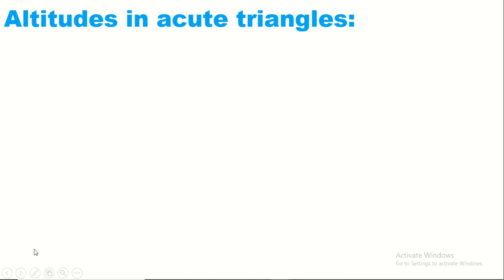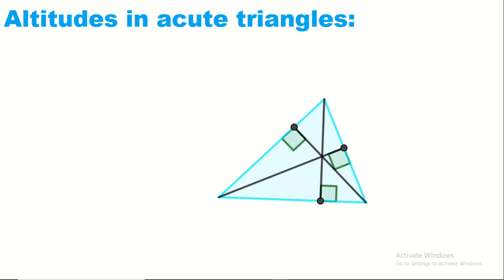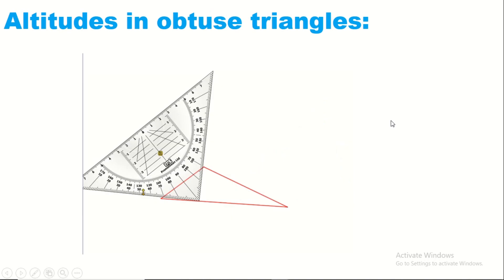This intersection of the three heights is called the orthocenter. 'Ortho' means orthogonal — we have perpendiculars, meaning orthogonal lines. The orthocenter is the meeting point of the orthogonal projections of the three vertices, and it lies exactly inside the acute triangle.